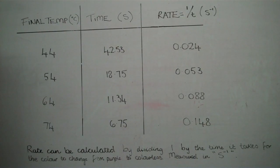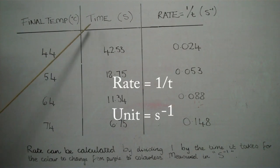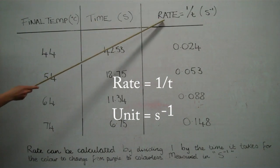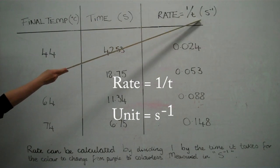We put the results from our experiment into a table. The final temperature is measured in degrees Celsius, time is measured in seconds, and rate is equal to 1 over T and is measured in s to the minus 1.